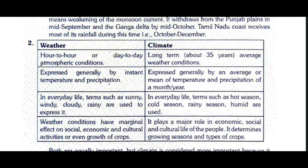Question two: Differentiate between weather and climate, and state which is more important. Weather refers to hour-to-hour or day-to-day atmospheric conditions, while climate refers to long-term average weather conditions. Weather is expressed by instant temperature and precipitation; climate is expressed by the average or mean temperature and precipitation of a month or year.